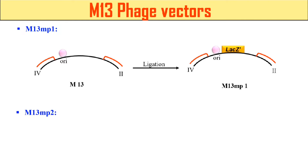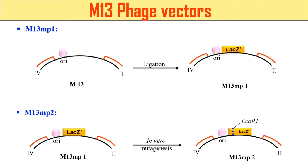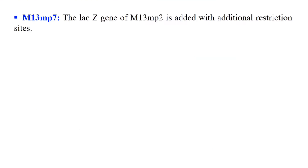The second example of a vector based on M13 is the M13 MP2 vector, which is an extension of M13 MP1. In this case, by in vitro mutagenesis, we add a restriction site for the EcoR1 enzyme. This is now called the M13 MP2 vector.